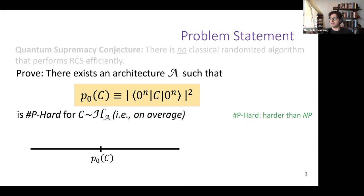#P-hard means really hard—it includes NP-hard. It's like a counting version of NP-hard. NP-hard asks: does there exist a satisfying assignment? #P-hard asks: how many satisfying assignments are there? If the answer is zero, it's unsatisfiable, but if the answer is one, two, three, et cetera, it's satisfiable. #P-hard demands that actual number—how many.